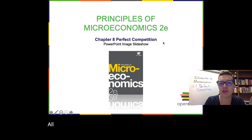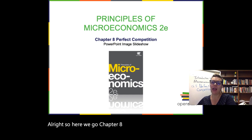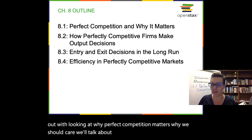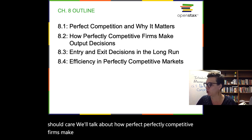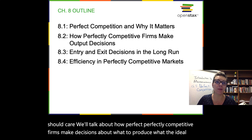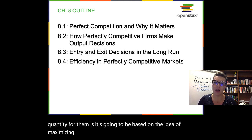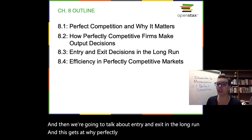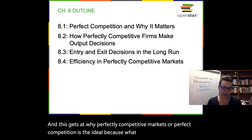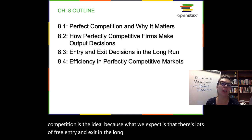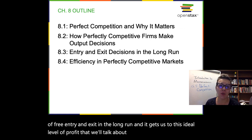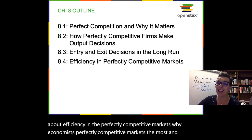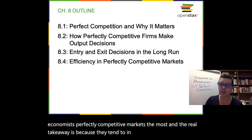Chapter 8: perfect competition. We start out looking at why perfect competition matters. We'll talk about how perfectly competitive firms make decisions about what to produce — the ideal quantity — based on the idea of maximizing profit. We'll talk about entry and exit in the long run. And in the end, we'll talk about efficiency in perfectly competitive markets, and why economists like them most because they tend to maximize efficiency and welfare.